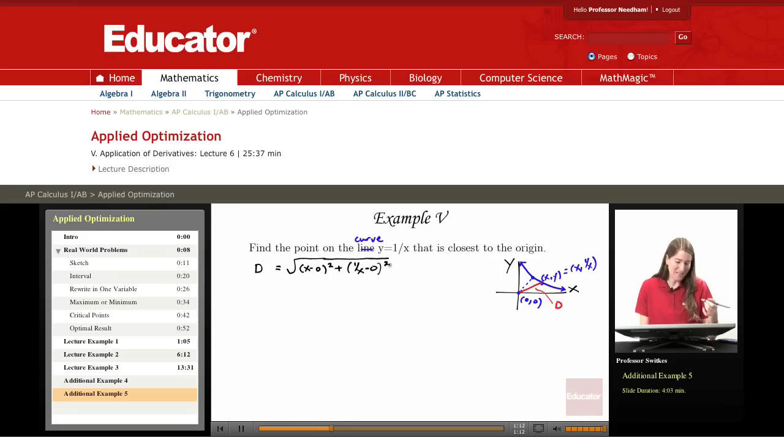Now rather than minimizing D, which has this radical, we could minimize D squared, which avoids the radical, and this is legal. Minimizing D squared is going to minimize D for us. And so really, I'd like to minimize this function.